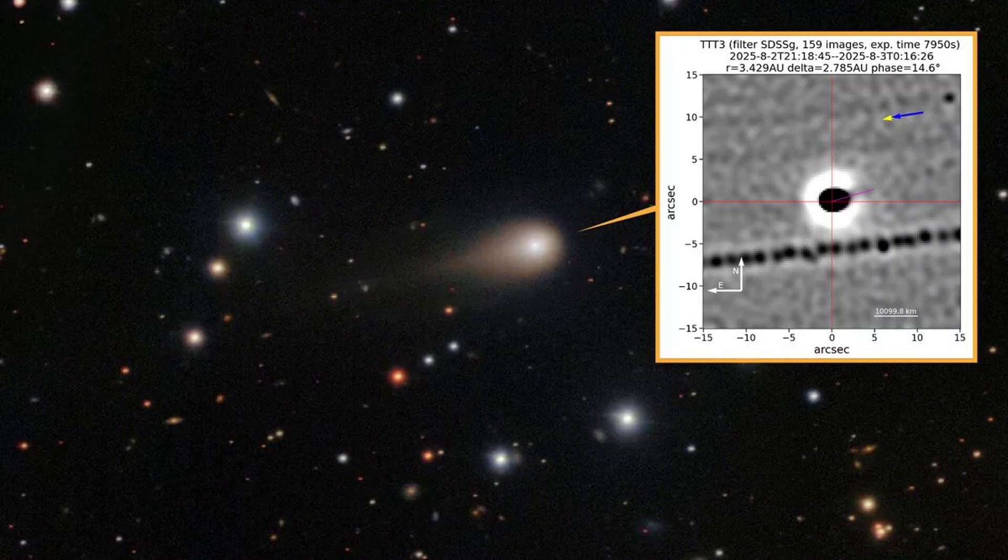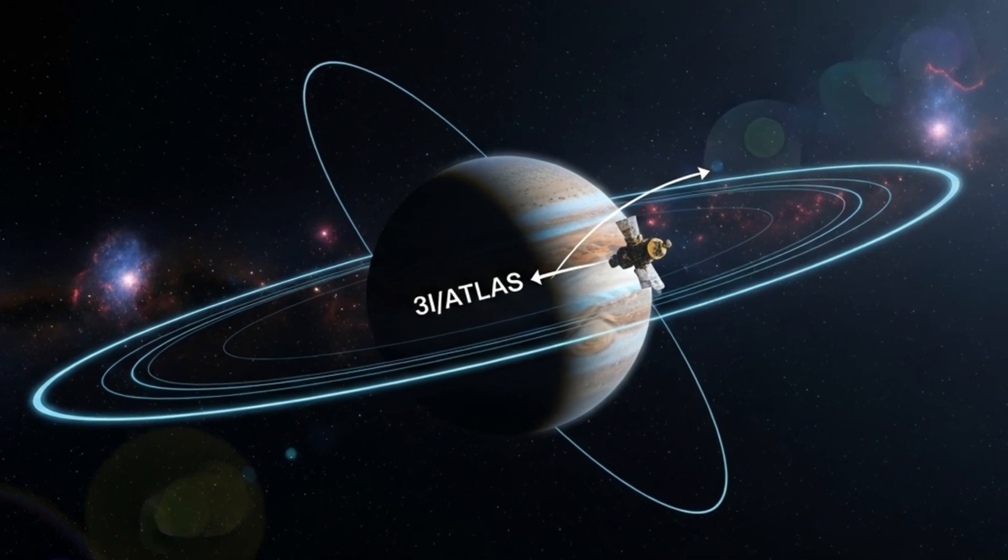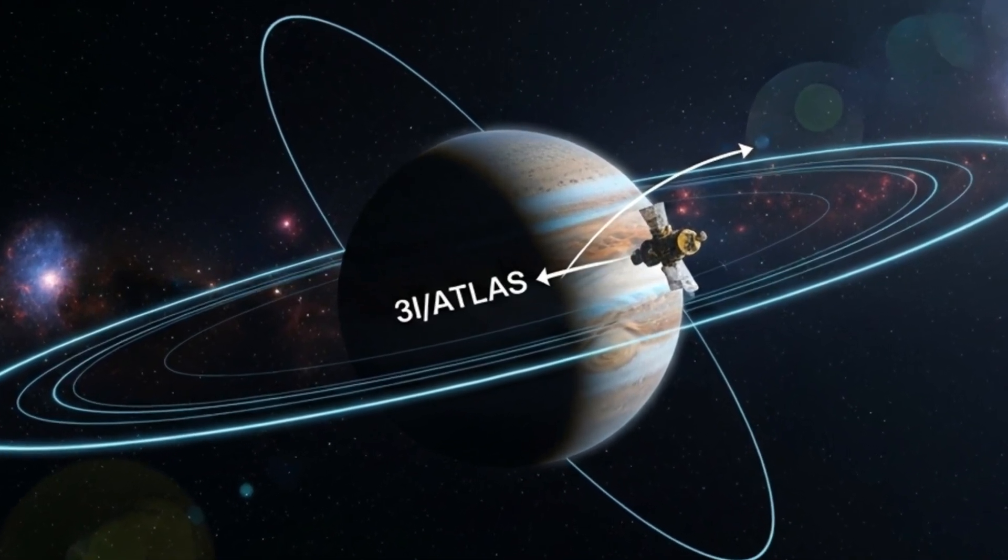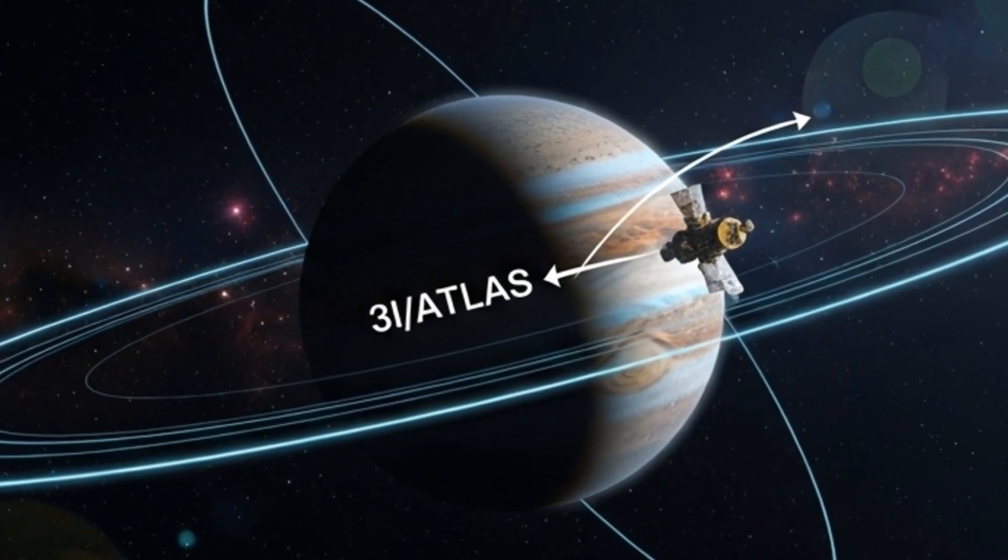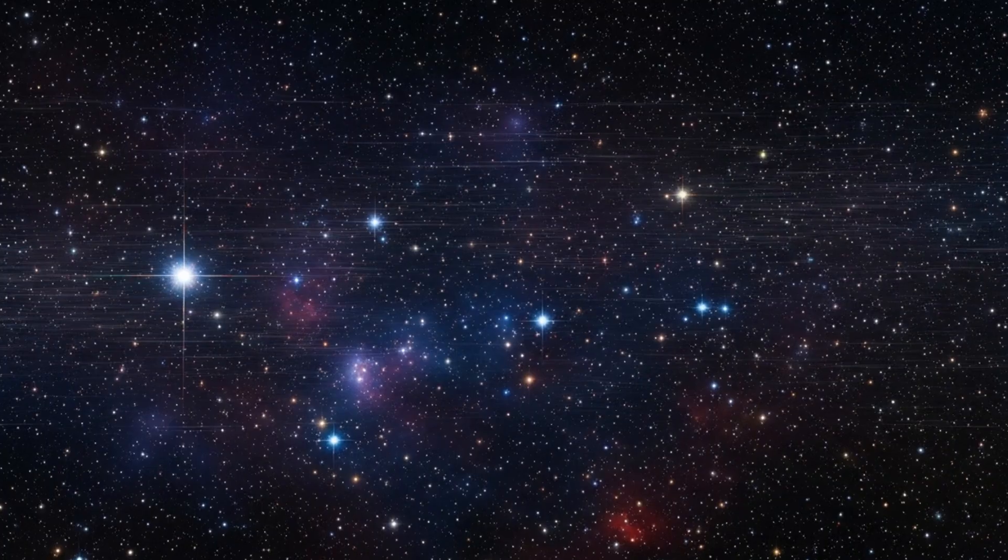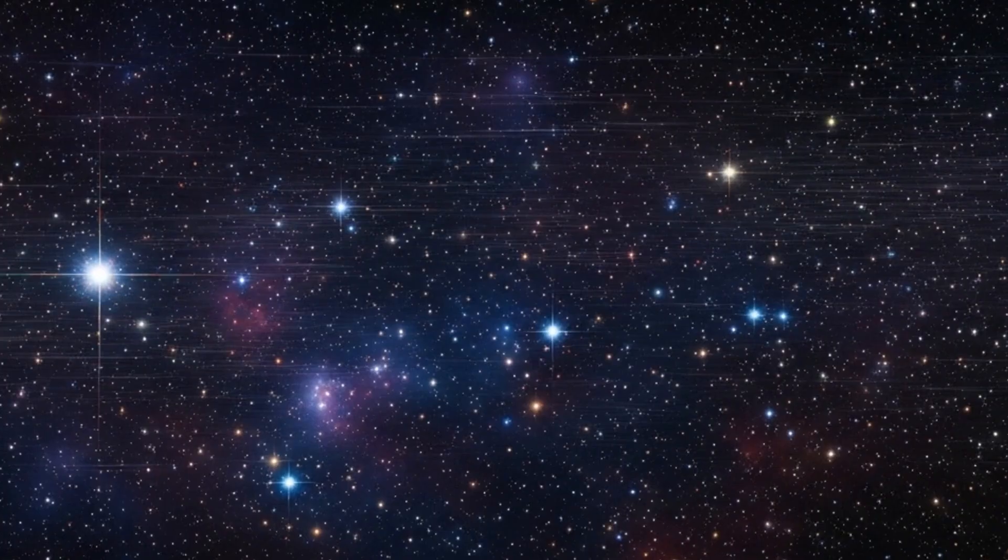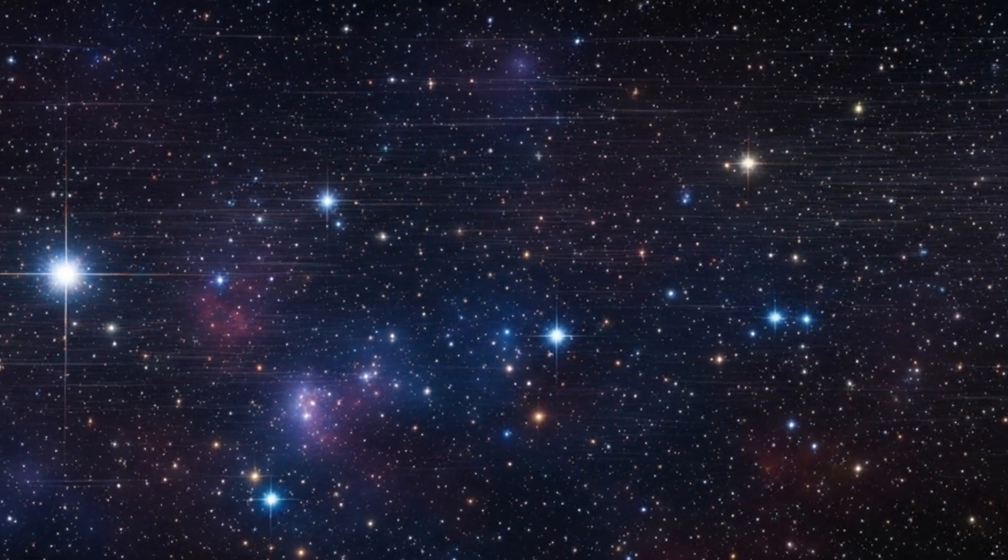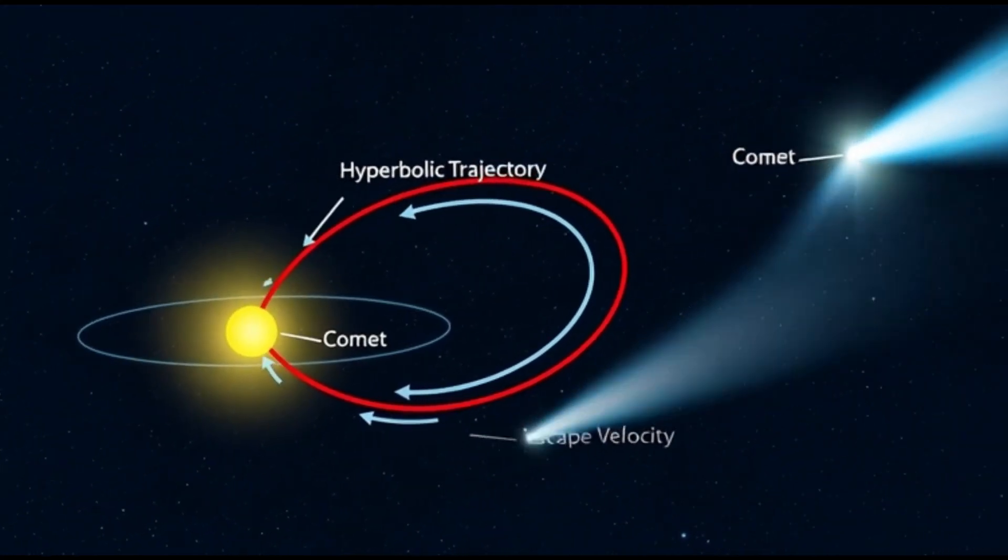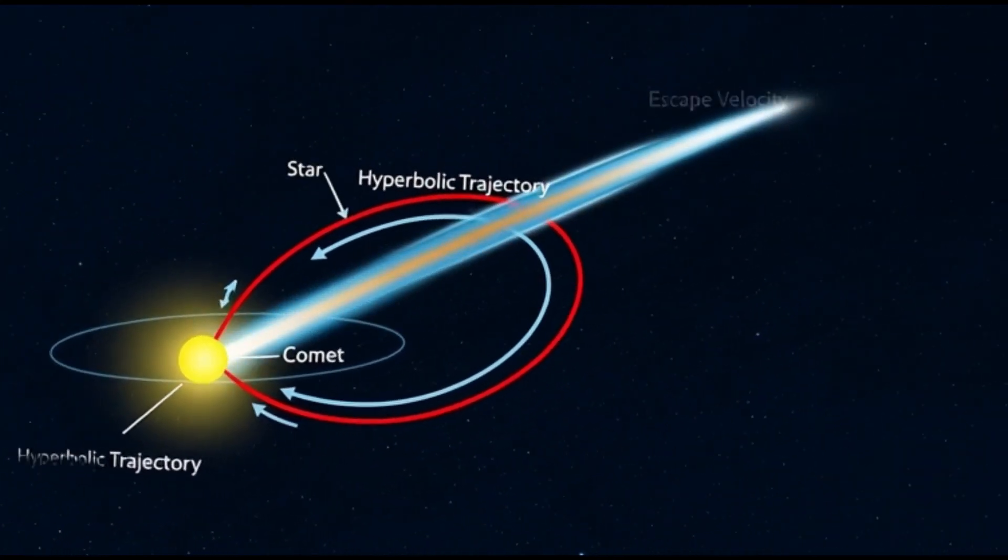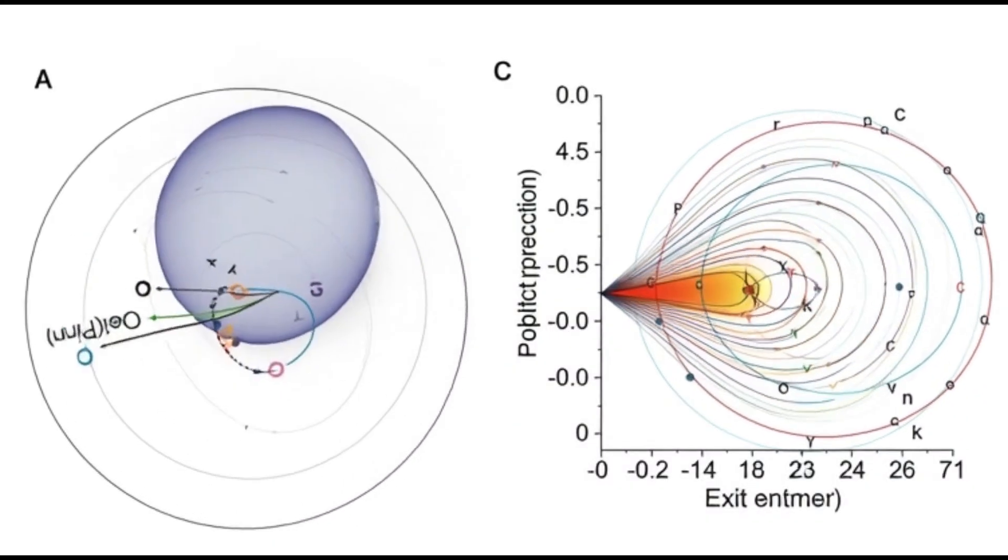In plain terms, it came from the void between the stars and was only passing through. That single measurement changed everything. The object earned the name 3i Atlas, the third confirmed interstellar interloper after Oumuamua and Borisov. What began as a routine detection turned into a global scramble, because a hyperbolic trajectory means an origin outside our system, a one-time visitor carrying clues from elsewhere.